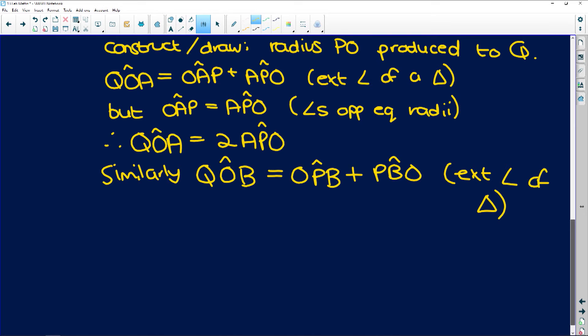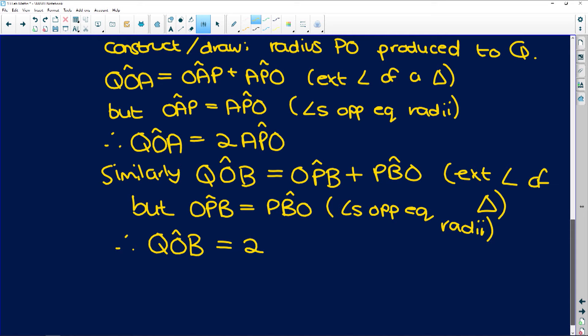But the same reasoning, OPB is equal to PBO. Why? Because they are angles opposite equal radii. Therefore, angle QOB, which is that exterior angle of the triangle but also half of the angle at the centre, is equal to twice, I think we're looking for OPB.